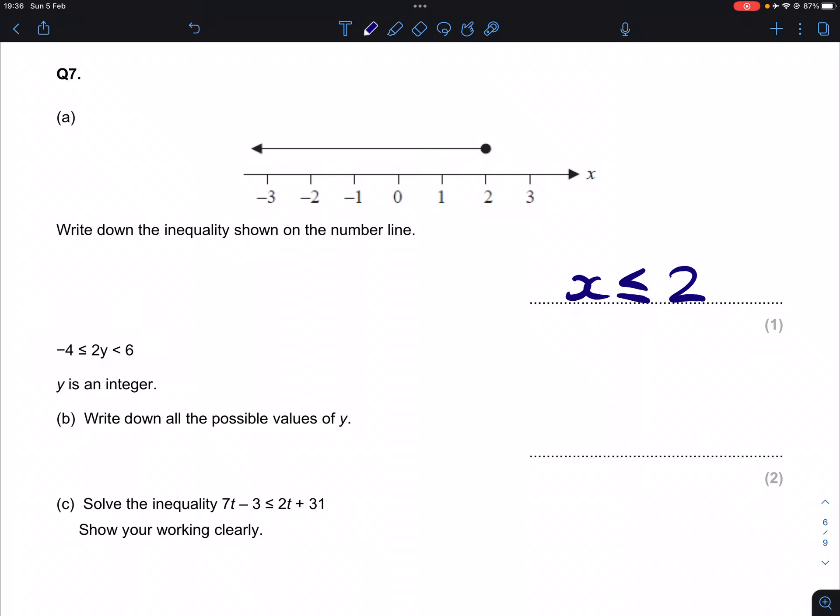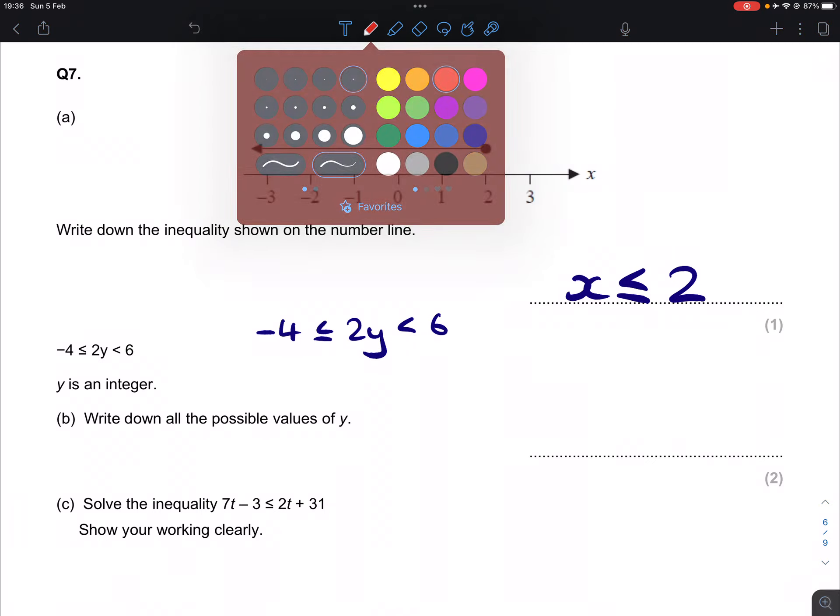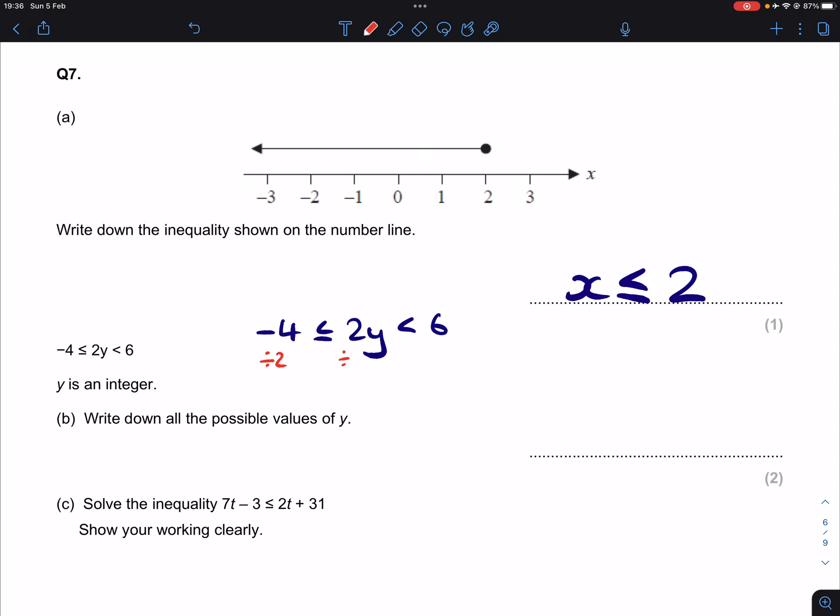That inequality doesn't have y on its own yet, so we can first divide everything by 2 in order to make y on its own, and that will give us the following inequality: minus 2 is less than or equal to y is less than 3.